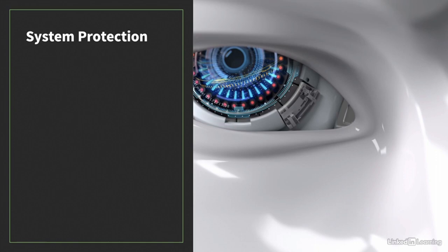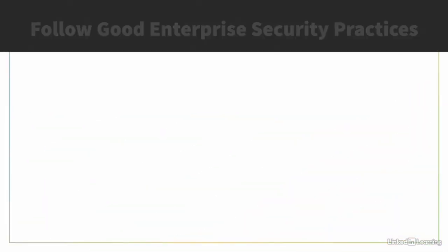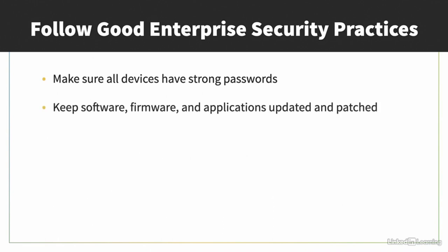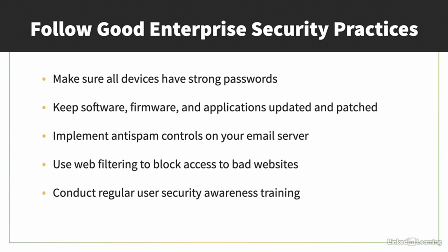Now let's talk about how to keep your systems from joining a botnet. Since the primary way systems are taken over and added to botnets is through malware, the best way to protect your systems is by using effective anti-malware with the latest version and most current malware definitions. Next, monitor your system processes, investigating any that look unusual or take excessive CPU or memory — these can be signs that your system is part of a botnet. Also follow good enterprise security practices: make sure all devices have strong passwords; keep software, firmware, and applications updated and patched; implement anti-spam controls on your email server; use web filtering to block access to sites that commonly host malware; and conduct regular user security awareness and phishing training.